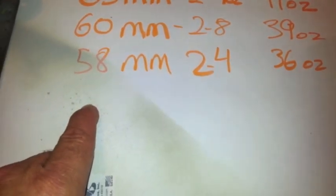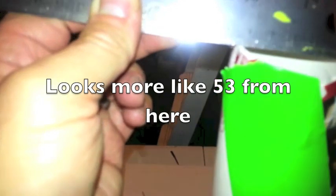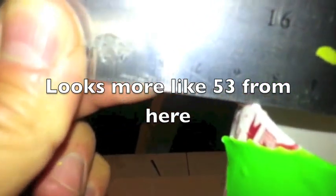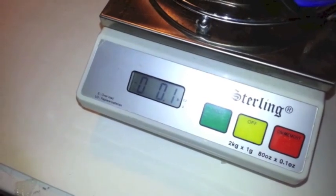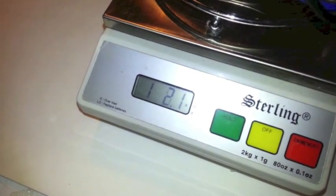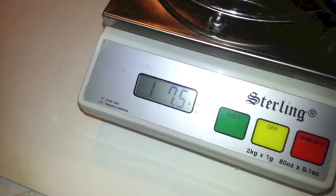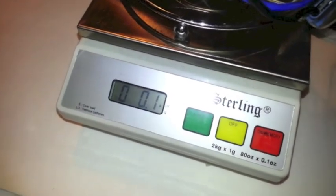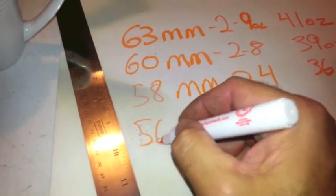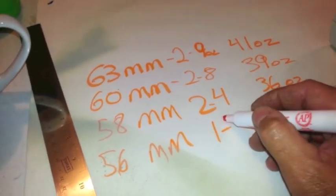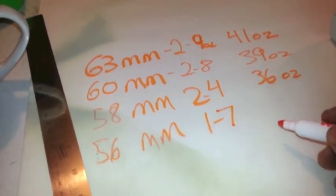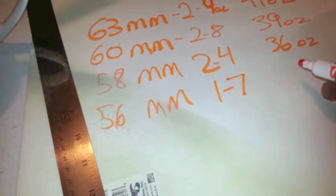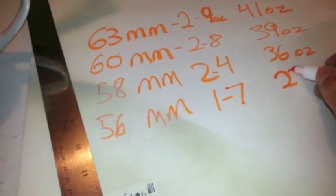Alright, so that was 1.7, 1.8. At 56mm, we have a huge drop. Let's say 1.7, so that's 23 ounces.